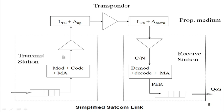Let us look at the total communication link in a satellite communication system briefly. It is packet communication, so packets are queued at the transmission station. Based on multiple access requirements, the packets are modulated and if necessary error-correction coded. Multiple users share the transponder — that is the multiple access concept — and the signal is up-converted, amplified, and transmitted through the troposphere to the satellite.